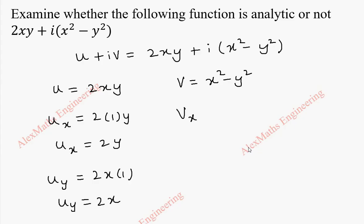Similarly, let me find v_x, it is only 2x. y is constant, so it is 0. And v_y will become, this is 0 because x square is purely constant and this is minus 2y. So v_y we get minus 2y.